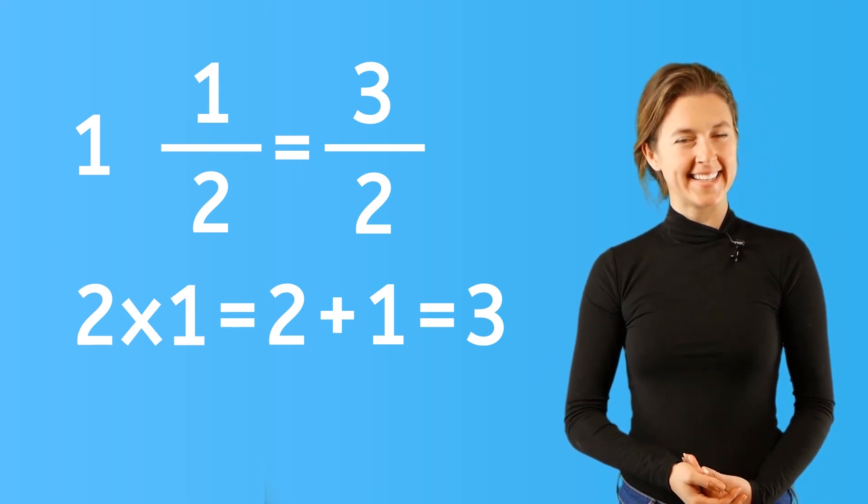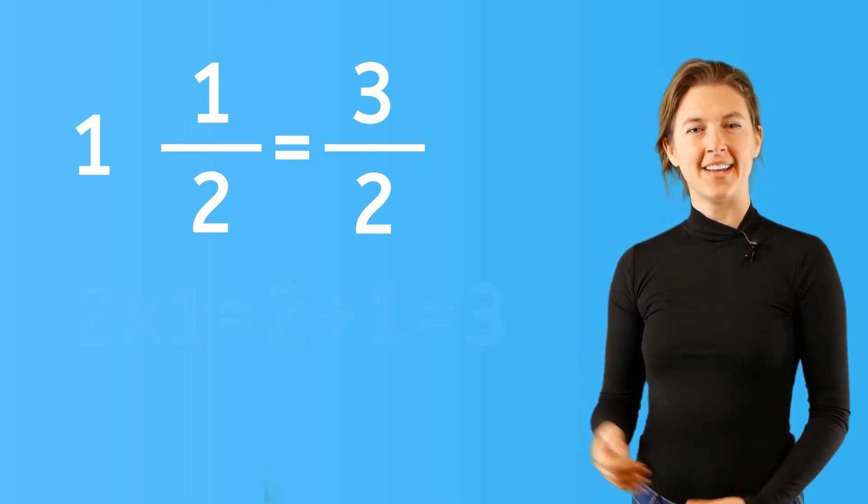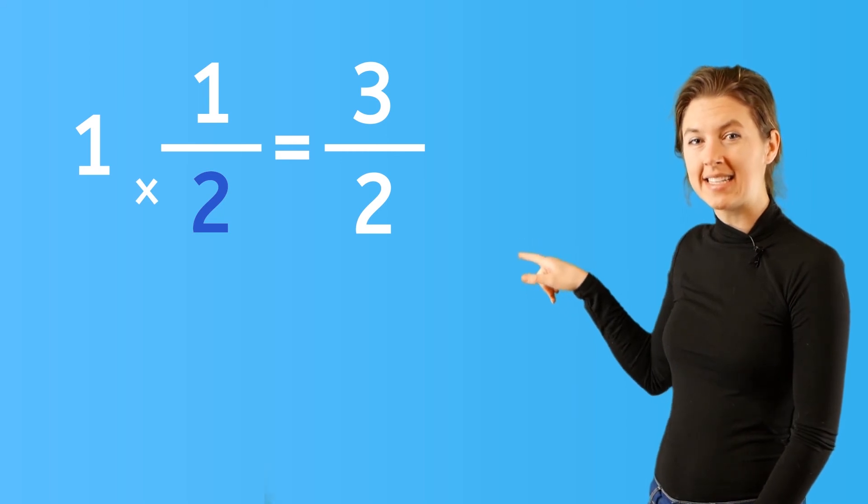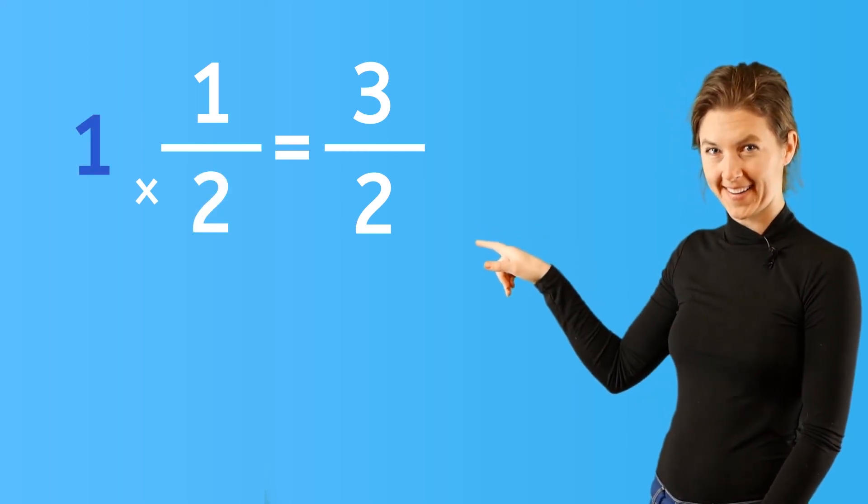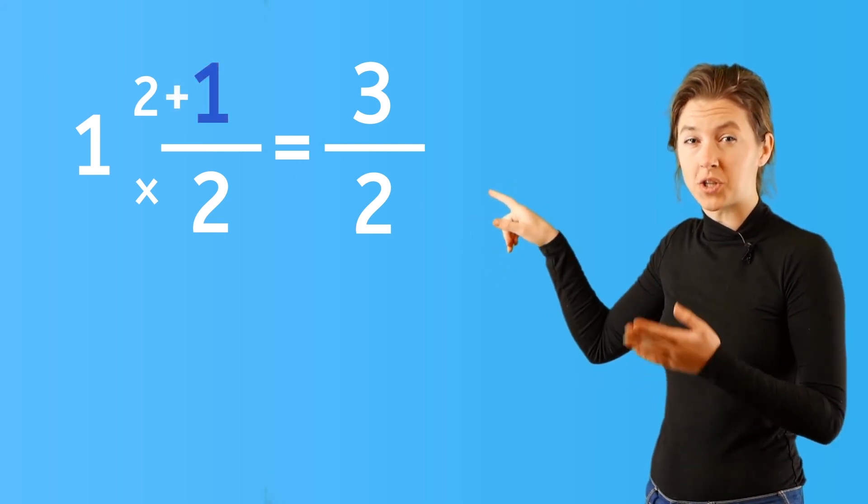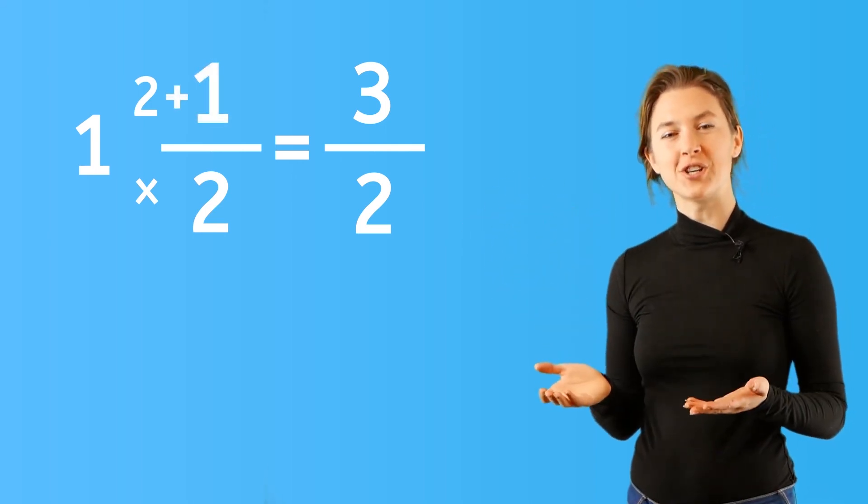Do you get it? Multiply the denominator, two, times one, the big number, is two, and then two plus one plus the numerator is three, so three over two.